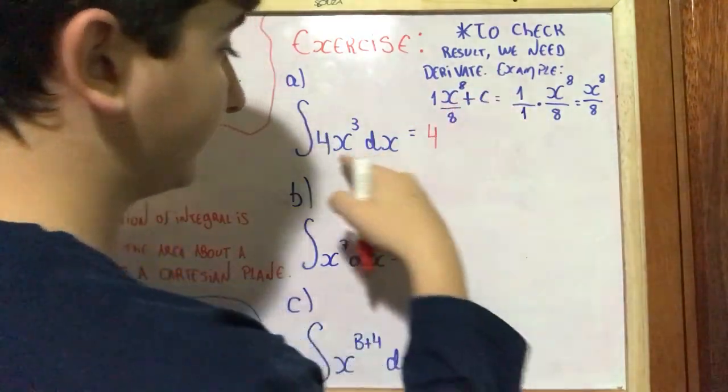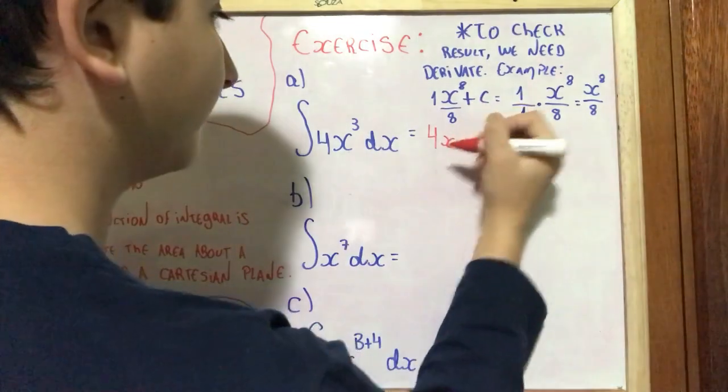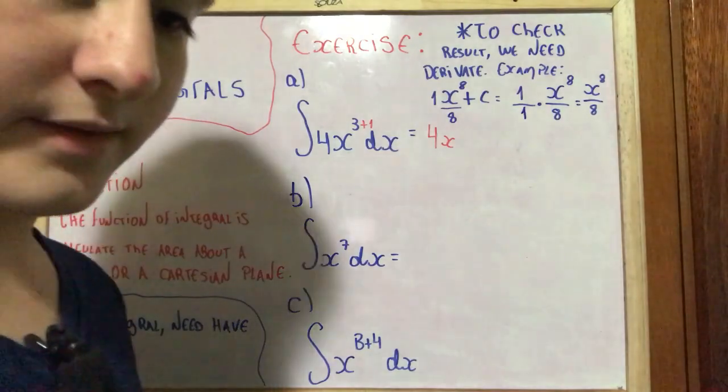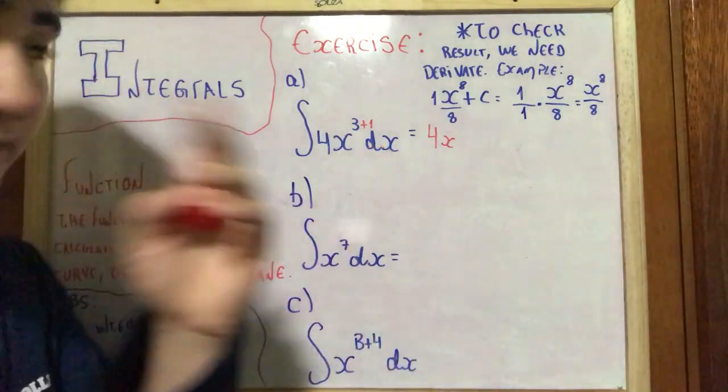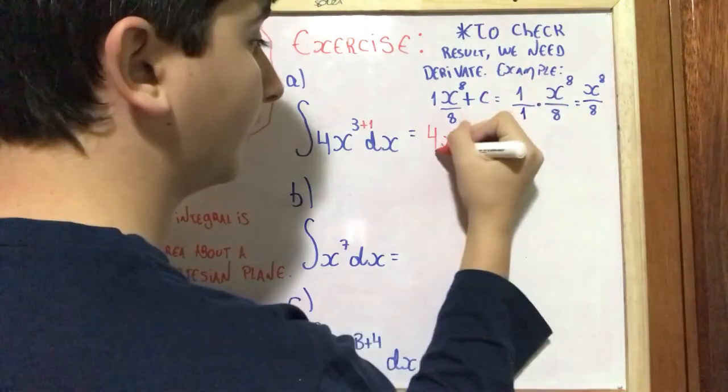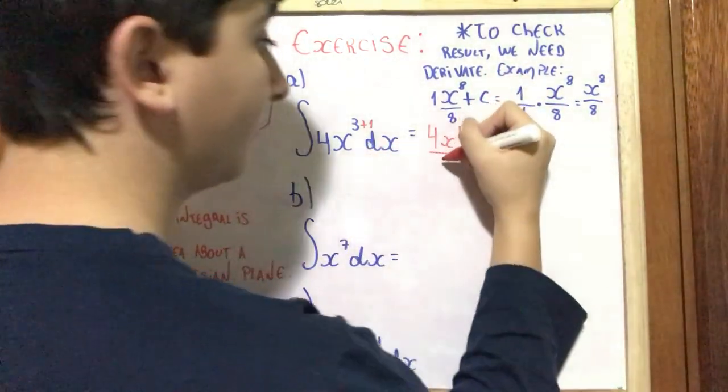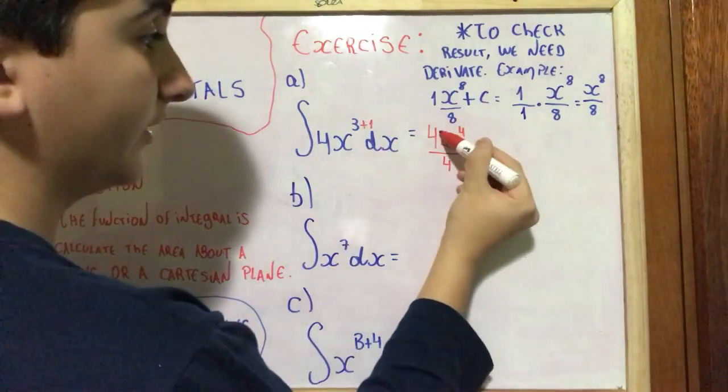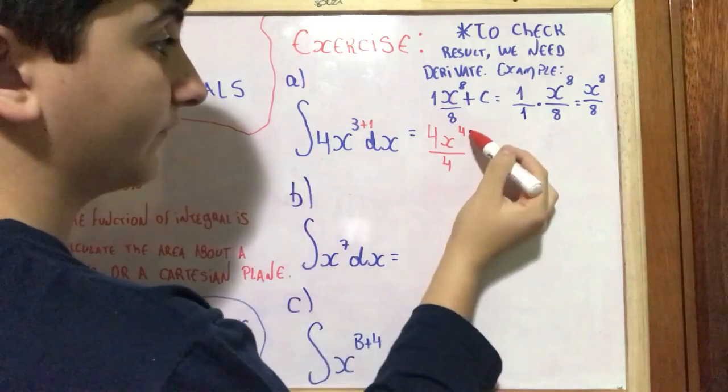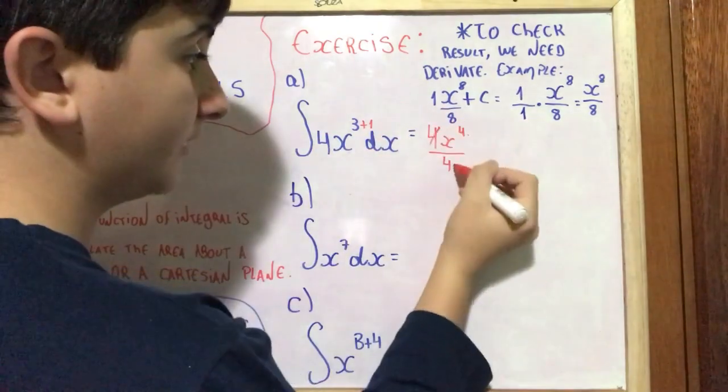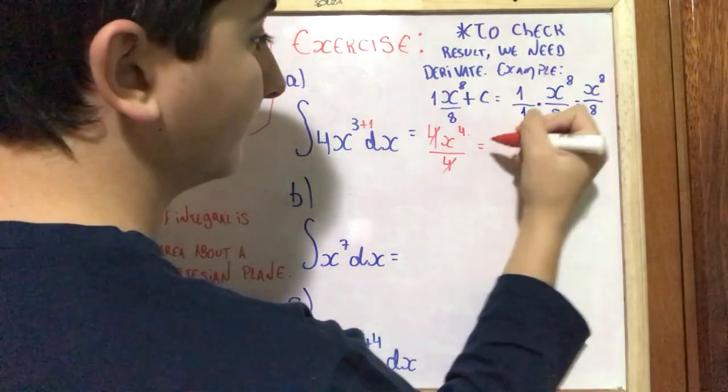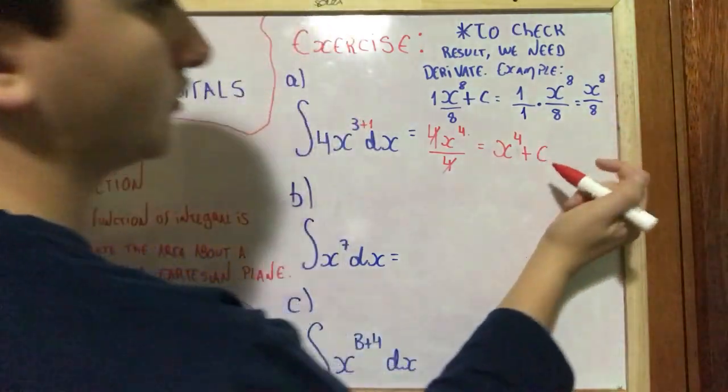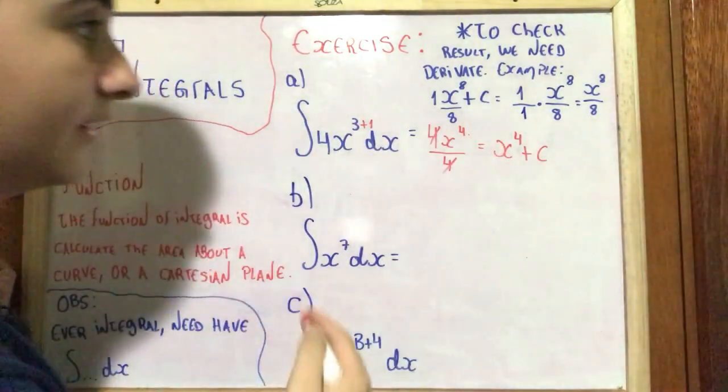Repeat the 4, put X, we need to plus 1 here, and divide by 4. Don't think the 4 is here and here, no. We have 4 here and here, but we can cancel this 4, and the result is X⁴ plus a constant.